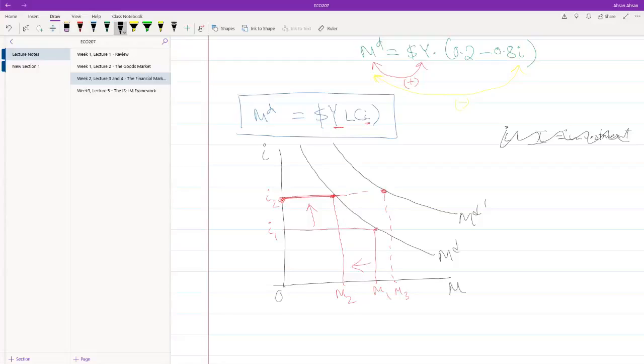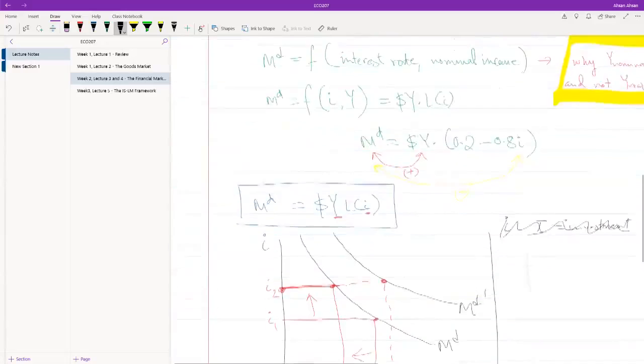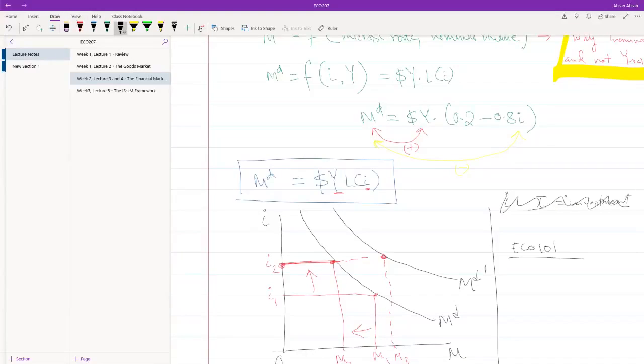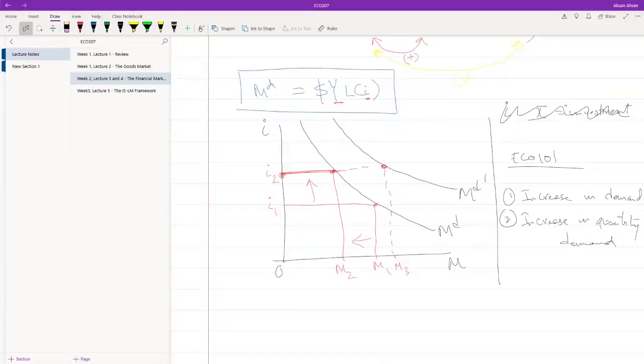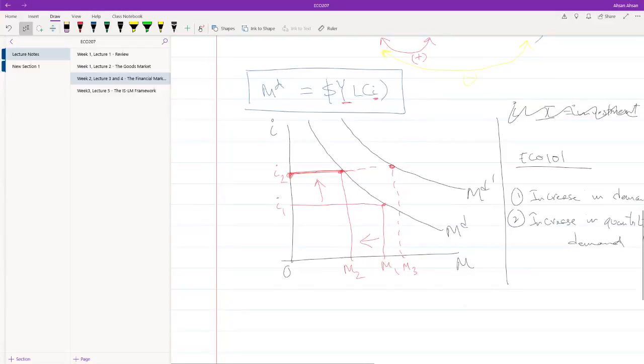So if some of you are struggling to understand what's going on here, remember what you have already learned in eco 101. There are two things: one is increase or decrease in demand, and then there is something called an increase or decrease in quantity demanded. So effectively, that's what's happening. When interest rate is changing, we're experiencing a change in quantity demanded of money. But when income is changing, we're experiencing a change in the demand of money. If you don't remember this, please go back to your 101 notes and revise your 101 notes.